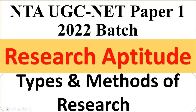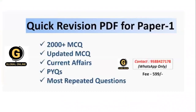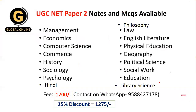Before we go ahead, an important announcement: the new batch for Paper 1 is going to start from 19th of September, that is Monday, where we'll be starting a new unit. For quick revision for your upcoming examination, we have a quick revision PDF for Paper 1 consisting of 2000 MCQs, updated MCQs, current affairs, previous year's MCQs, as well as the most repeated questions. You can access these by pinging us on the given WhatsApp number. The fee for the same is 99. For Paper 2, we have notes and MCQs available; the list of Paper 2 subjects is reflected on screen, including the newly added subject philosophy. The cost is 1700, with a 25% discount resulting in 1275. For access, get in touch on the given WhatsApp number.